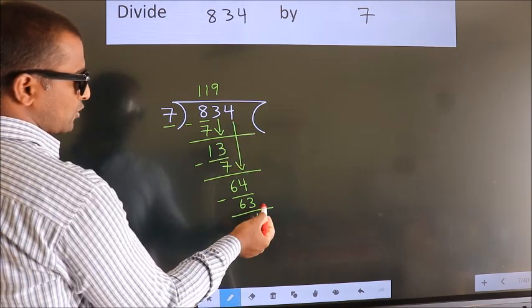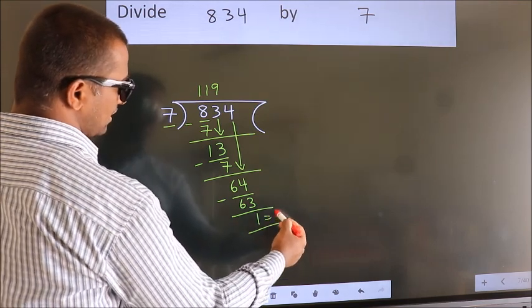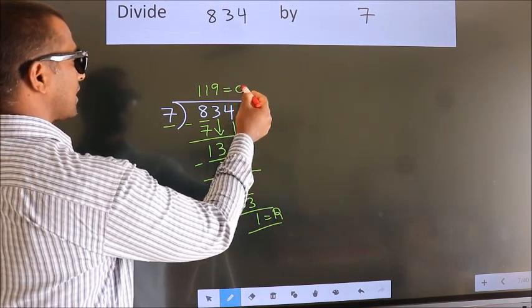No more numbers to bring it down. So we stop here. This is our remainder. This is our quotient.